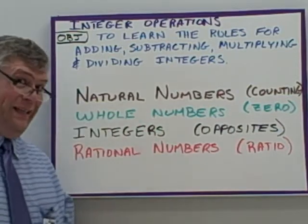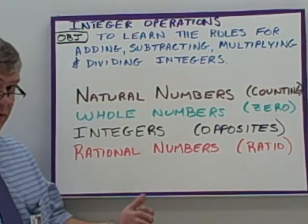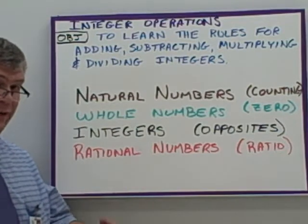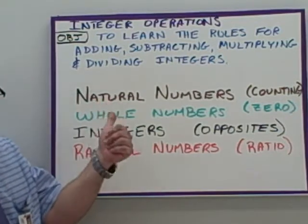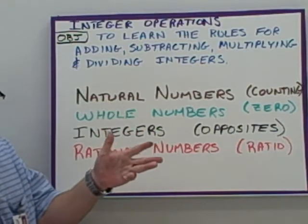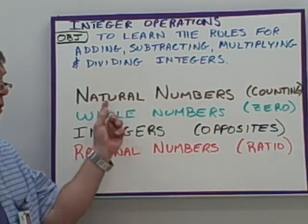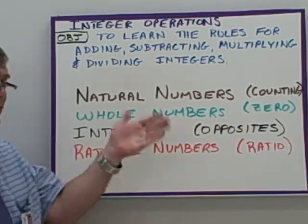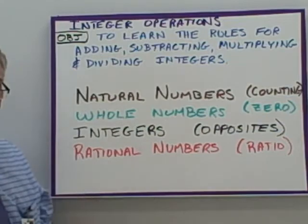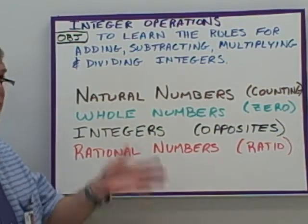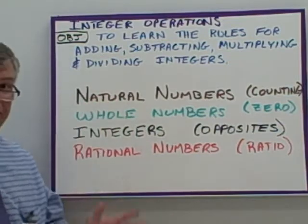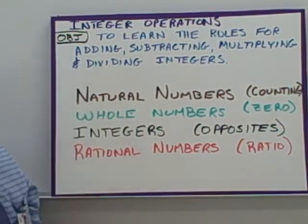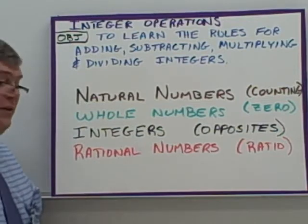You may have remembered back in kindergarten when you first started learning about numbers, you were counting numbers — one, two, three, four. Those are the natural numbers. They're every number you can count up to, up to one gazillion gazillion. They're just the natural numbers.